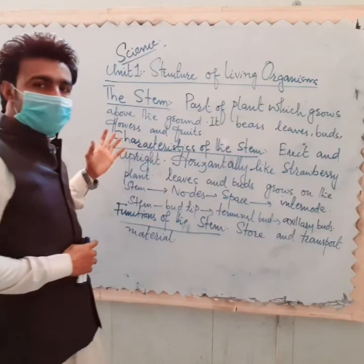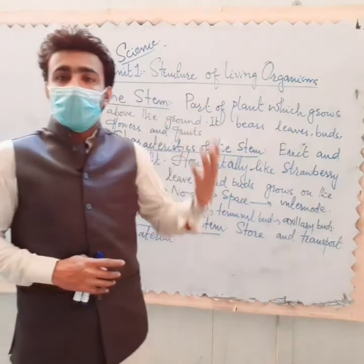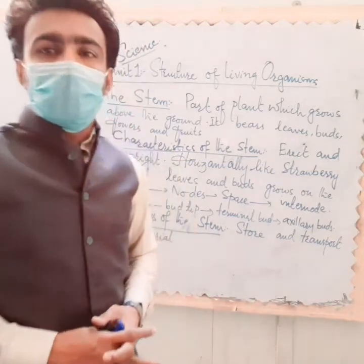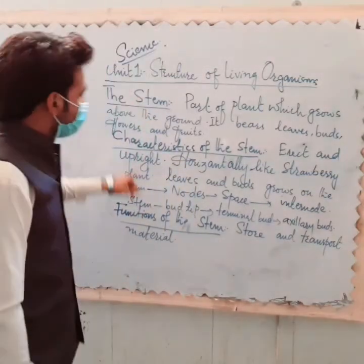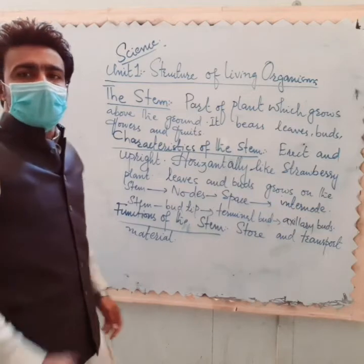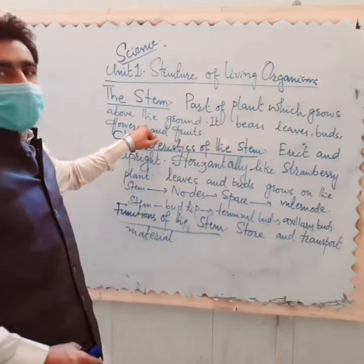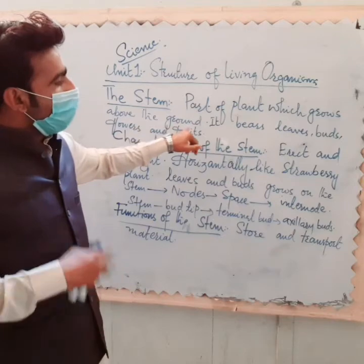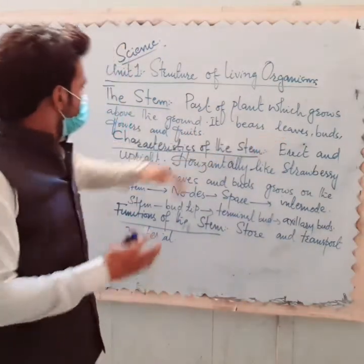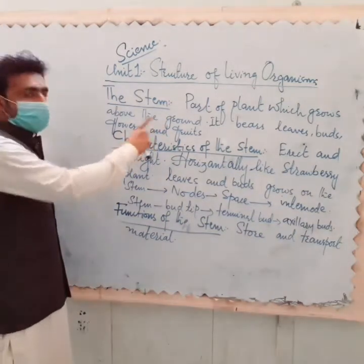So first we will discuss about the stem, after that we will discuss about the leaves and roots. So today we are going to discuss about the stem. The stem is the part of the plant which grows above the ground. It bears leaves, buds, flowers and fruits.